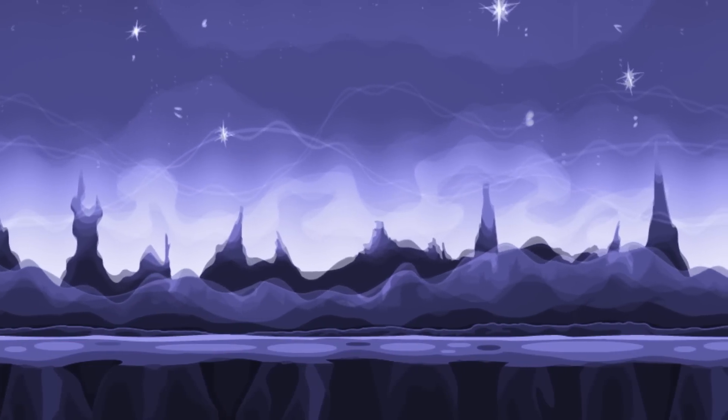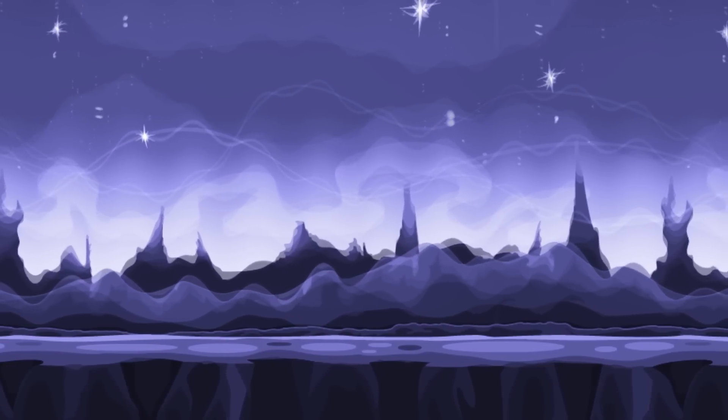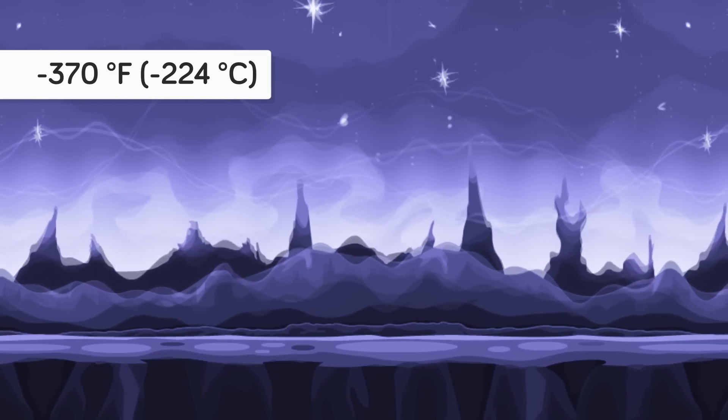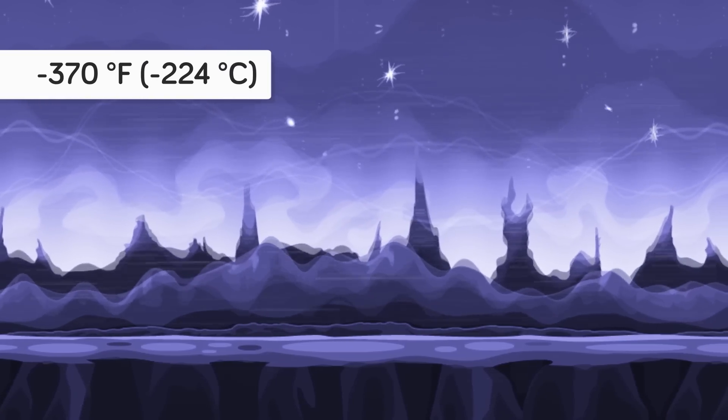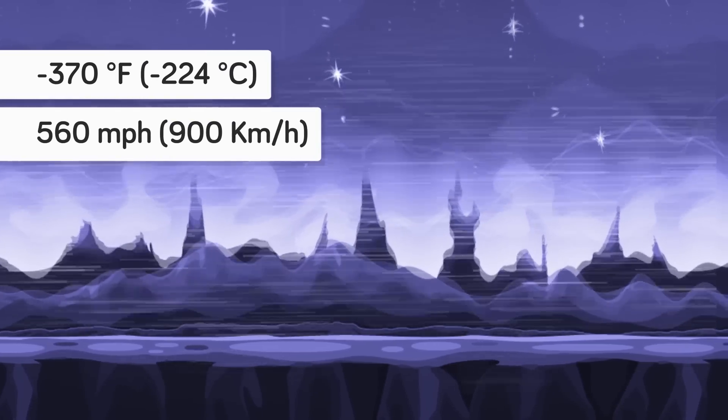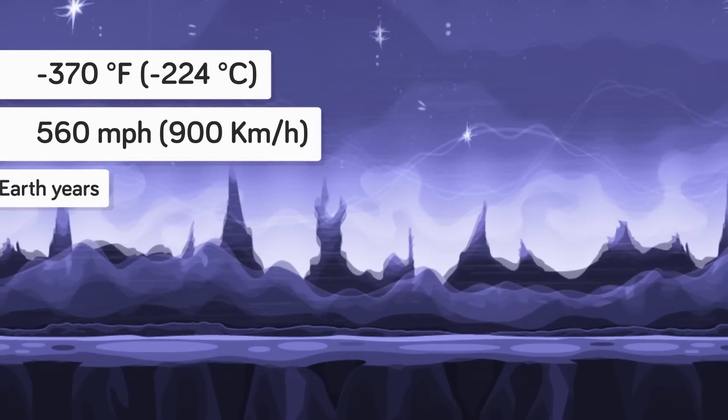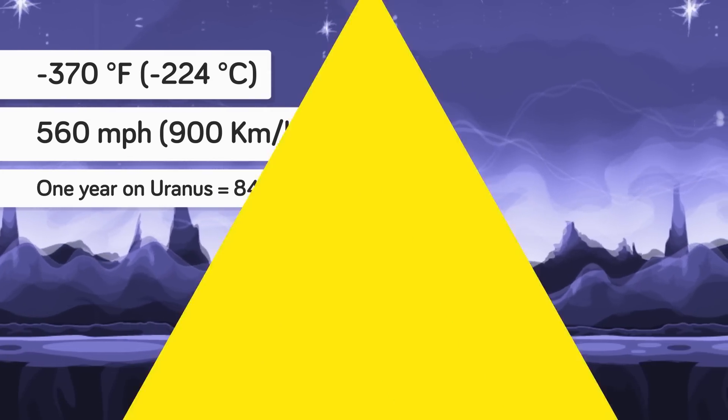And the top of the atmosphere is no better, with temperatures around negative 370 degrees Fahrenheit. On top of that, you have wind speeds of 560 miles per hour. The days are short, at 17 hours, but the years are another matter, because one year on Uranus is 84 Earth years.